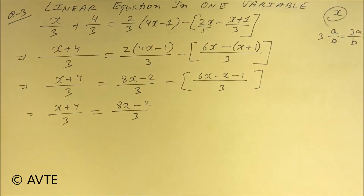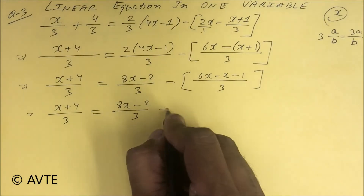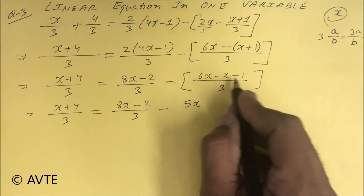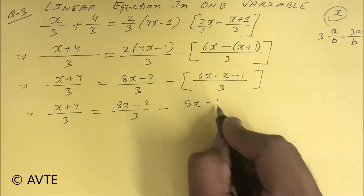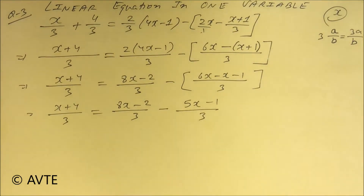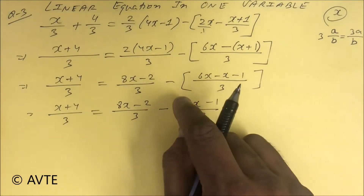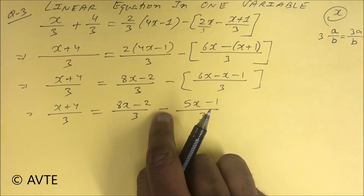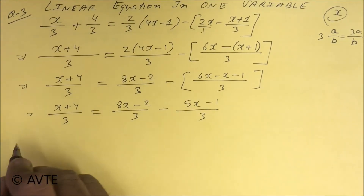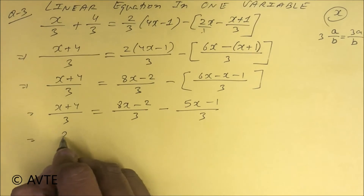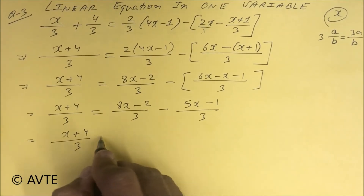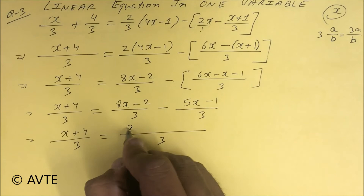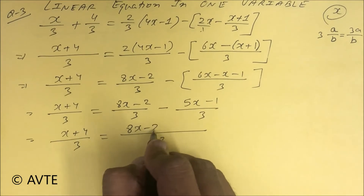This gives minus 5x minus one upon three. If I'm not putting a bracket there is an invisible bracket, because there is a minus sign. On the right-hand side the LCM is three, so we have 8x minus two.